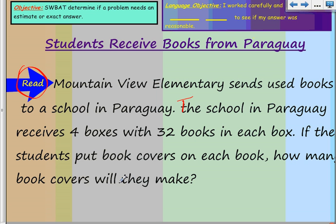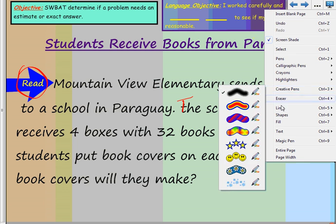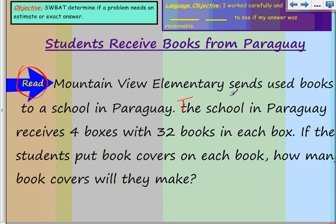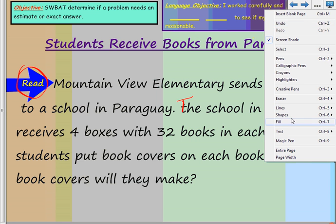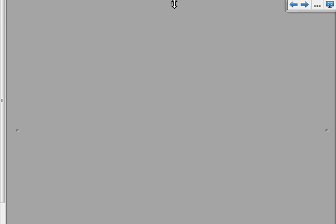Now, when we're doing this problem solving, and just so you know, really quick, I'm going to tell you this right now. I'm giving you the code word in a lot of pieces. That's the first one. You better write it down. So anyway, basically it says that if they put book covers on each book, how many book covers will they make? Well, let's go ahead and jump down to the page here.